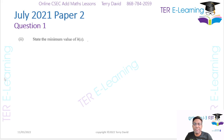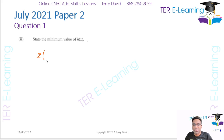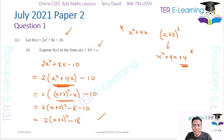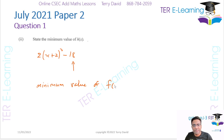The next part asks us to state the minimum value of f of x. Once you've completed the square and written it in the form 2(x plus 2) squared minus 18, the constant term is your minimum value. So the minimum value of f of x is minus 18.